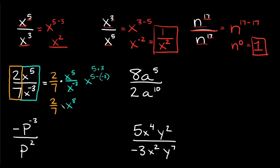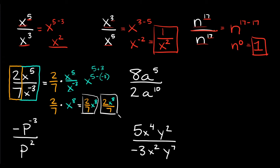And remember we're multiplying right here, so 2/7 times x to the 8th is equal to 2/7 x to the 8th. Or you could write it like this: 2x to the 8th over 7. This answer and this answer are the exact same thing, just two slightly different ways of writing it.